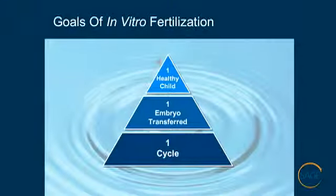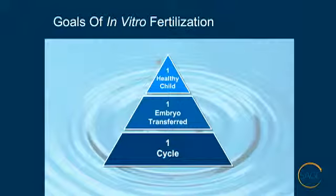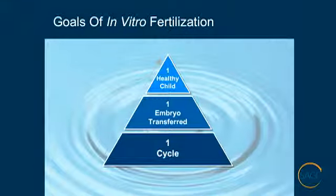The goal of an in vitro fertilization cycle today is to provide one cycle of IVF whereby one embryo is transferred, producing one healthy child.